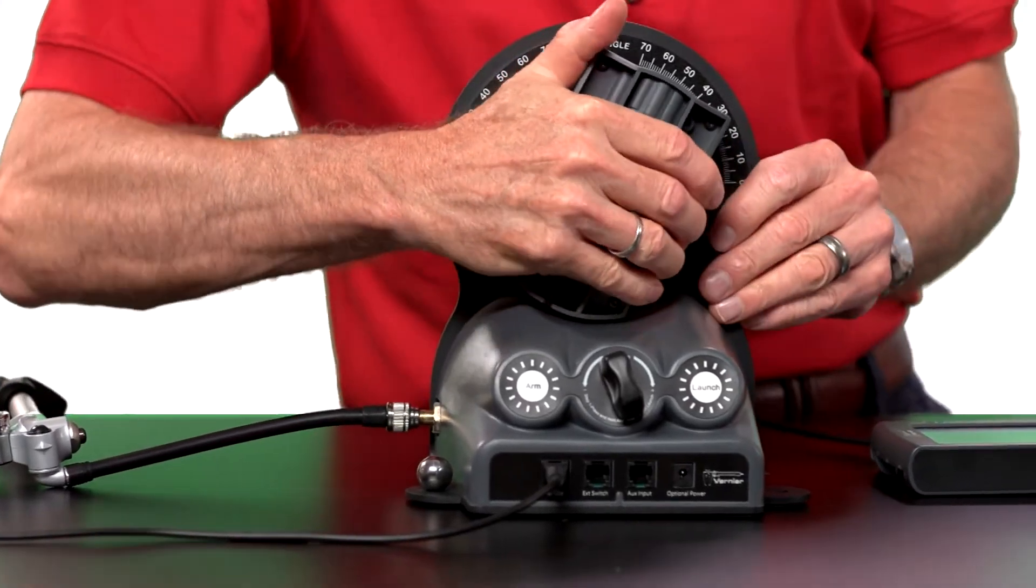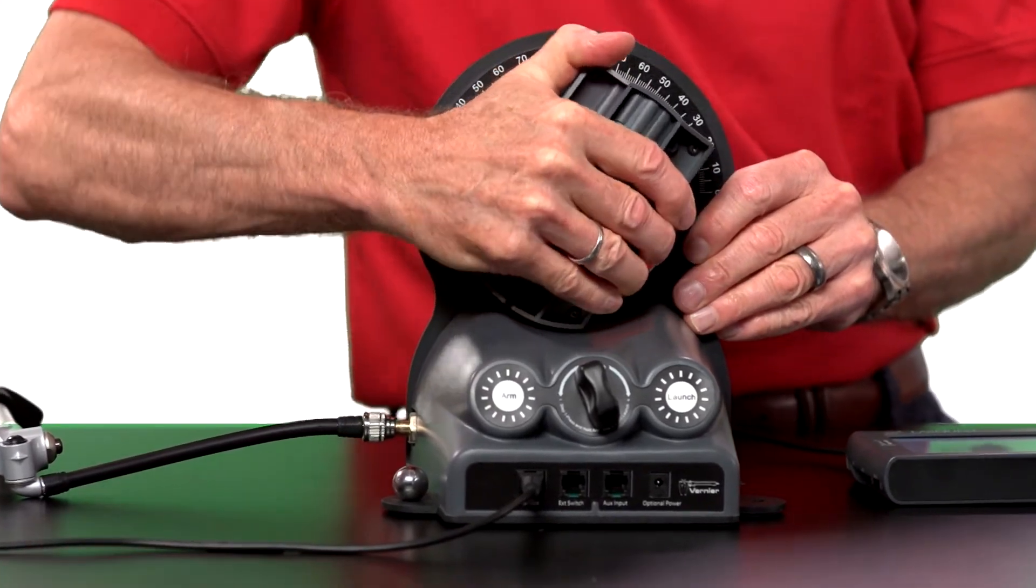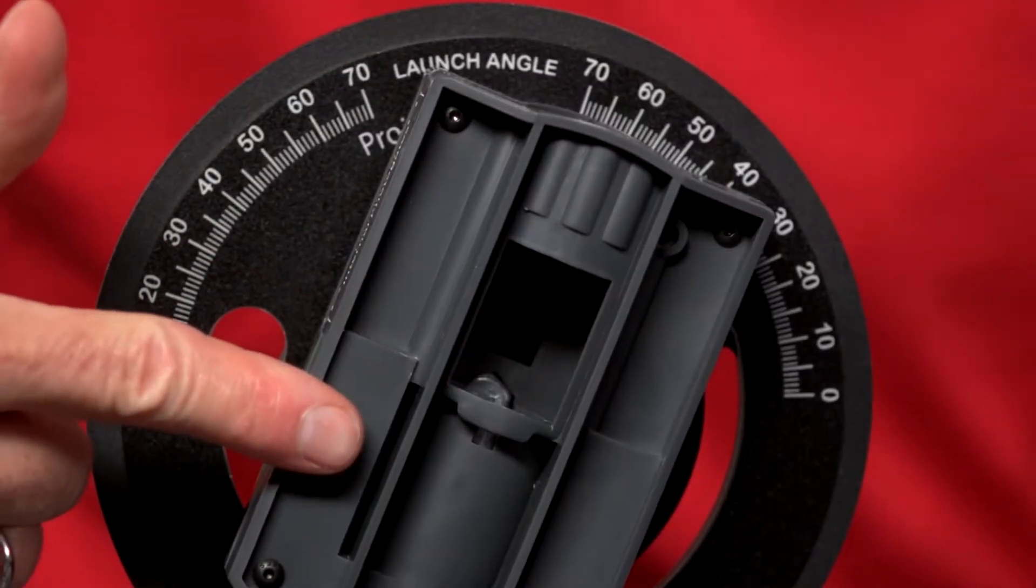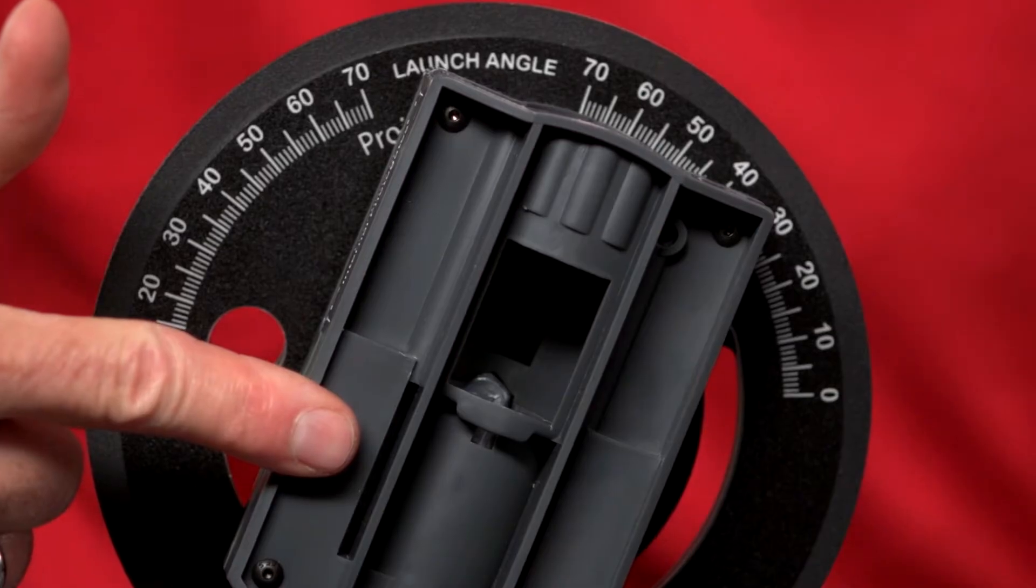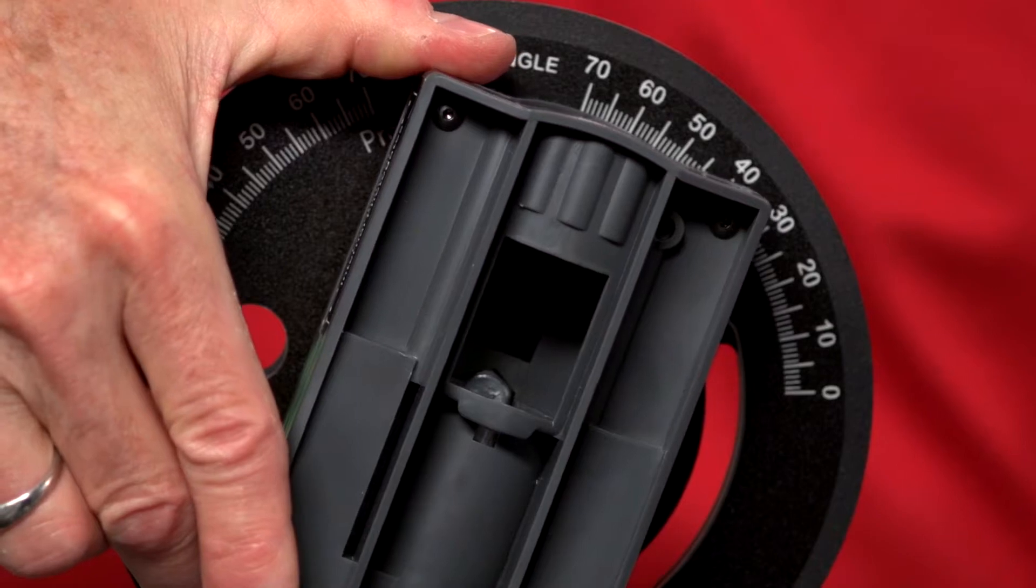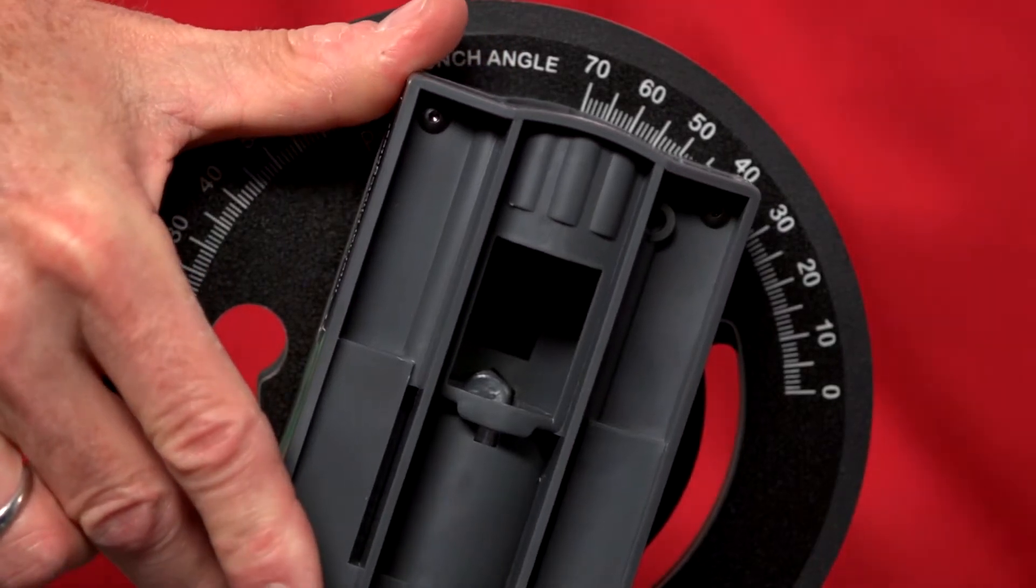You can control the launch angle right here. And the neat thing about this design is that no matter how you change the angle, the launch point is always right there, 14.6 centimeters above the table. It doesn't move horizontally or vertically as I rotate this, which makes some experiments easier.